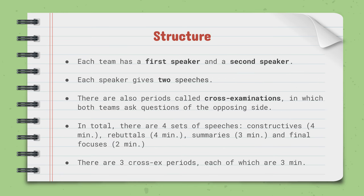Let's move on to the structure of how it works. Each team has two speakers since it's a partner event — we refer to them as the first speaker and the second speaker. In the round, every speaker gives two different speeches. There are also cross-examination periods, basically where both teams are able to ask questions of the opposing sides. There are four sets of speeches and three crossfire periods.